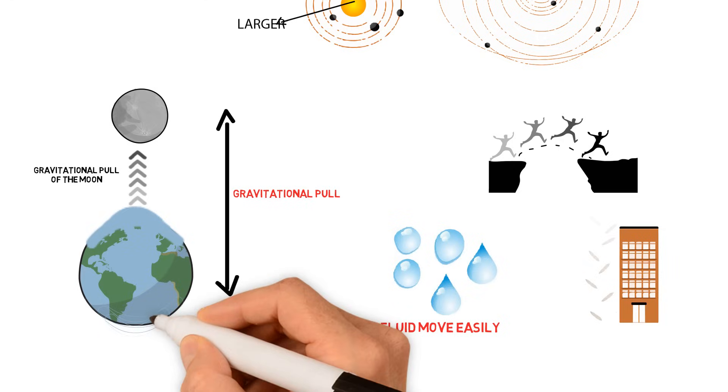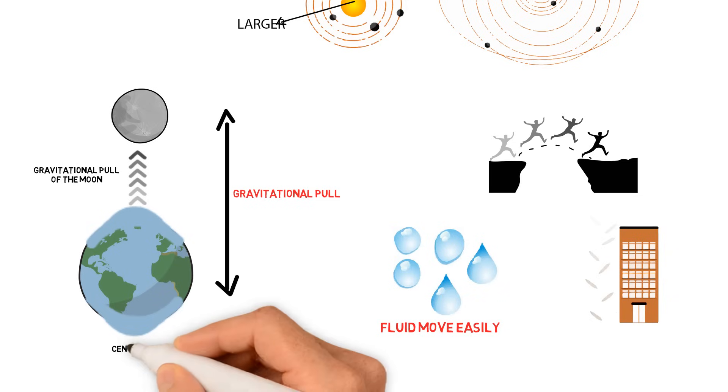And on the other side of the earth, there is another bulge in the ocean water. And this happens because this side of the water is further away from the moon and the centrifugal force that counterbalances gravity on earth. So there are two tidal bulges that are created on opposite sides of the earth.